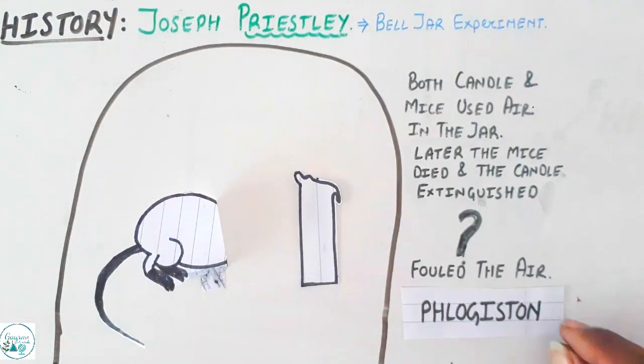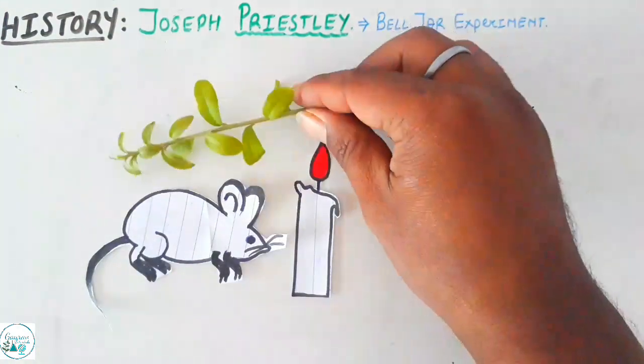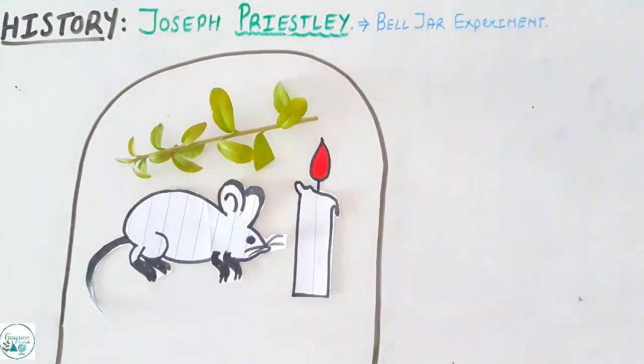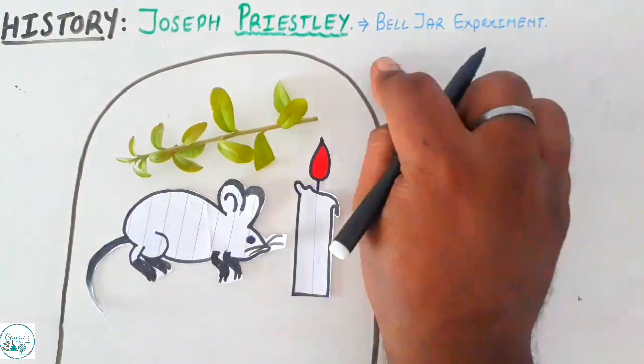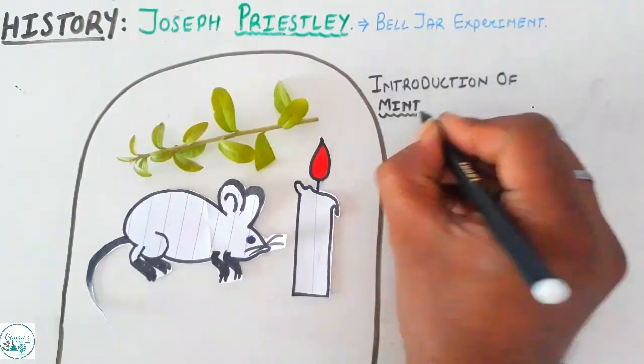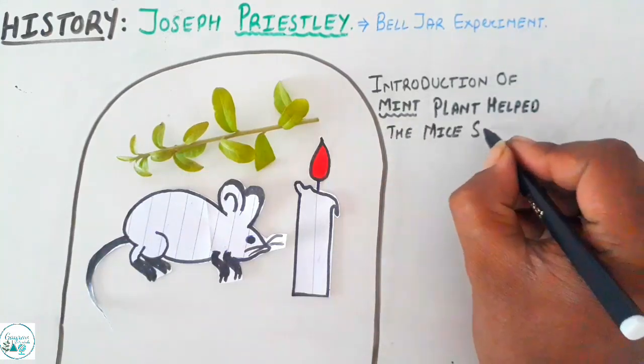This foul air was called phlogiston. In a similar set of experiments, he took mice, candle, and a plant this time in an inverted bell jar. This time it was found that introduction of the mint plant - the plant he took was a mint plant - helped the mice to survive longer and the candle also did not extinguish.